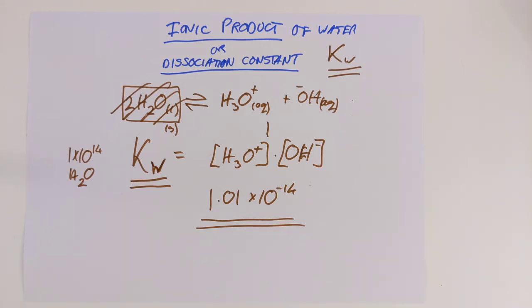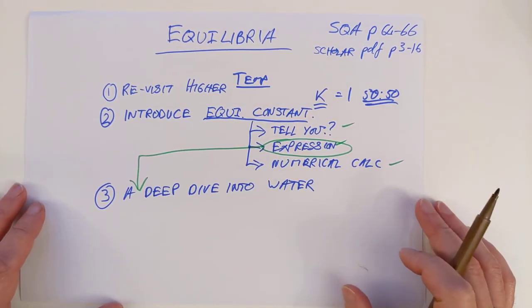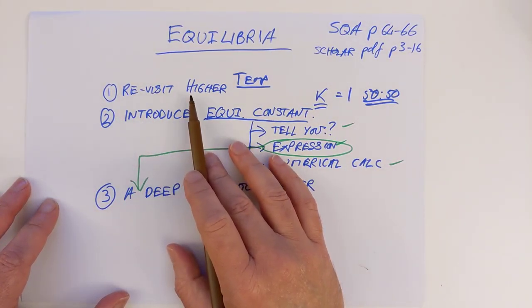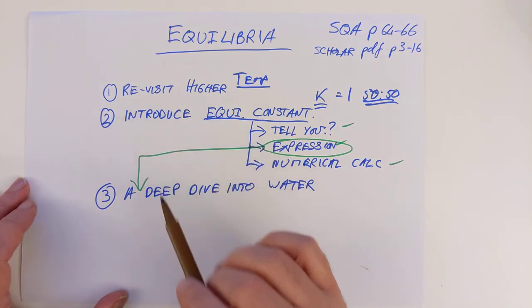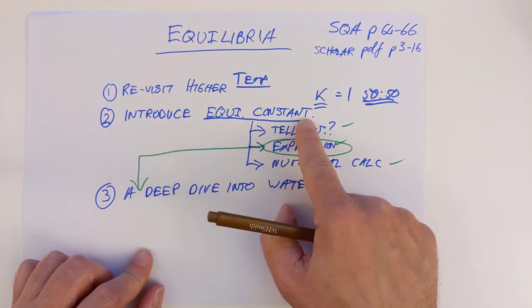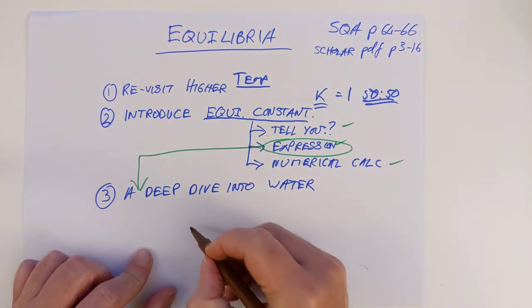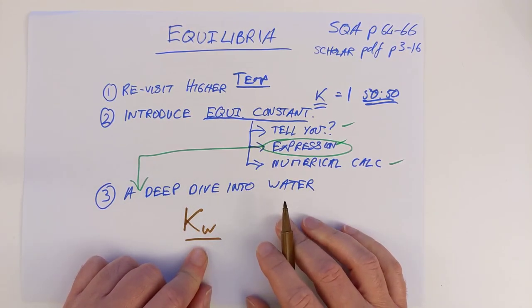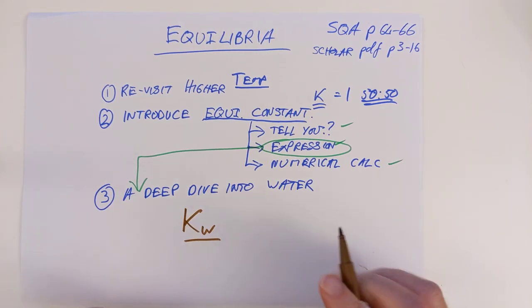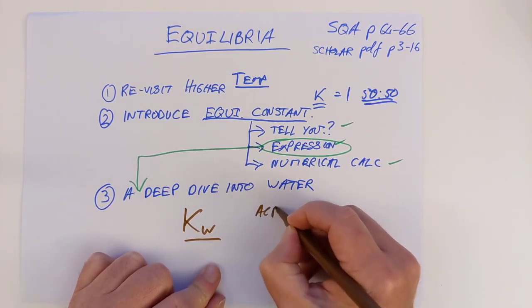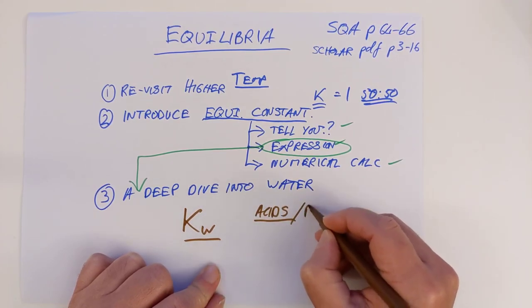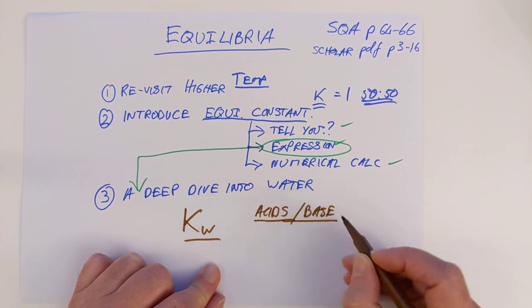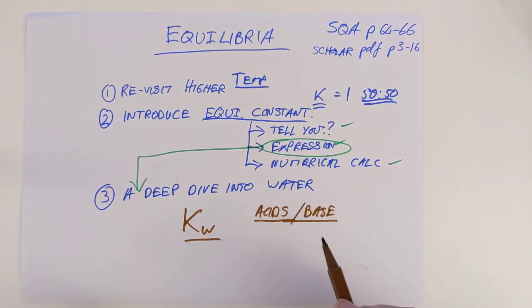So I just wanted to have a little look at the deep dive into the weirdness of water. Very quick summary: revisiting higher in terms of temperature, introducing the equilibrium constant, telling us these three things, and one last look specifically at the dissociation constant or ionic product of water. We will come back, probably in the next video actually, and we'll have a look at acids and bases. We'll have a look at our current definition of an acid and base, we'll give it a fancy name because the SQA want you to know the fancy name, and then we'll move on to something called strong and weak acids. In the meantime, thank you for listening. Bye-bye.